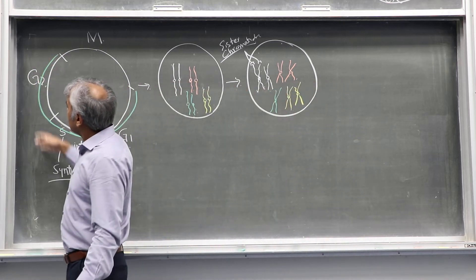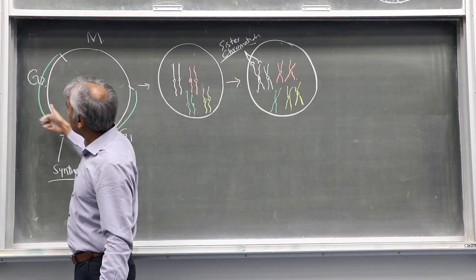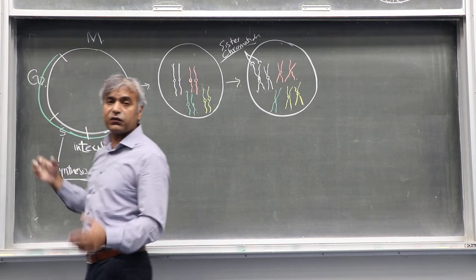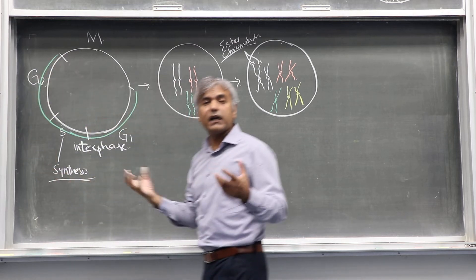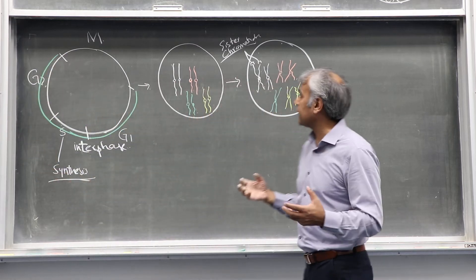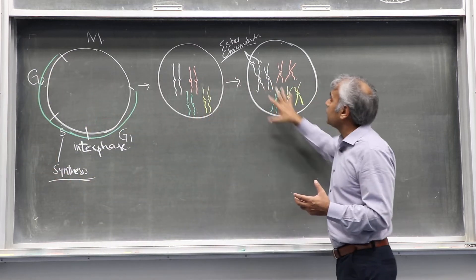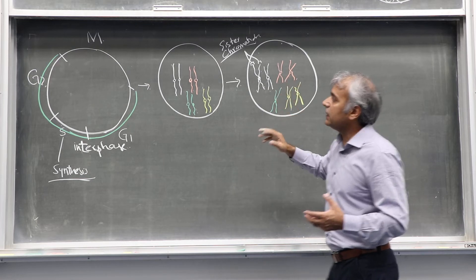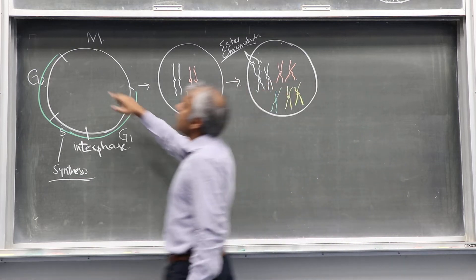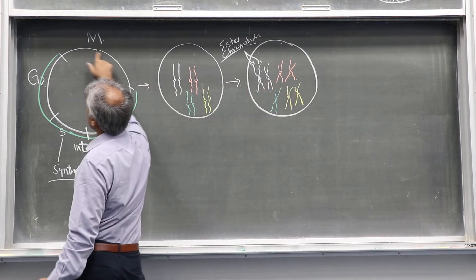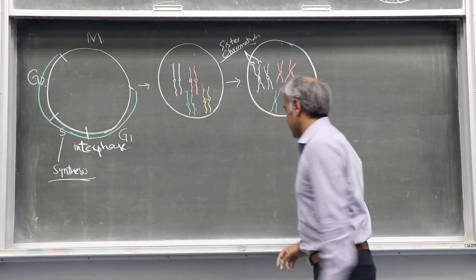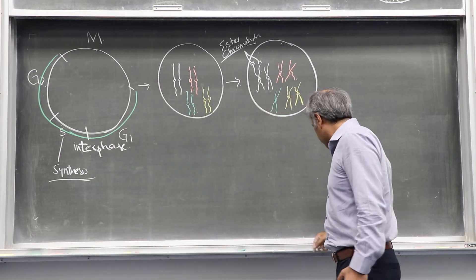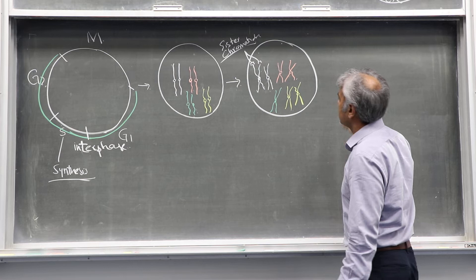The cell then goes through the next phase, which is the G2 phase. This is the phase where it ensures that it has complete genome duplication. And then it enters the mitosis phase.